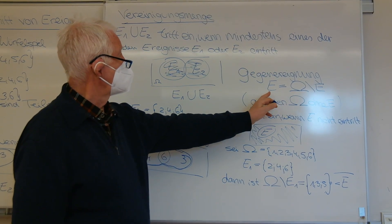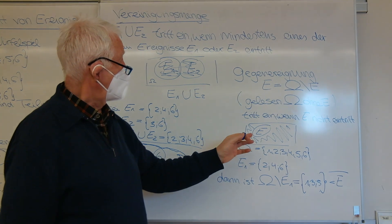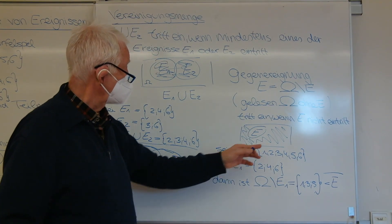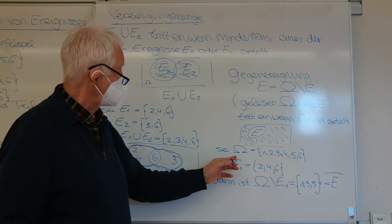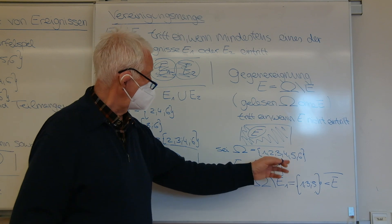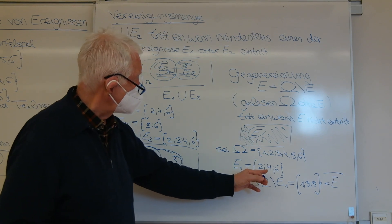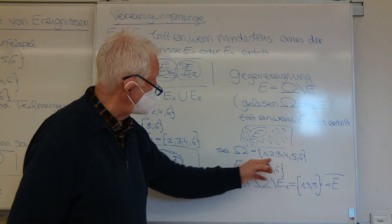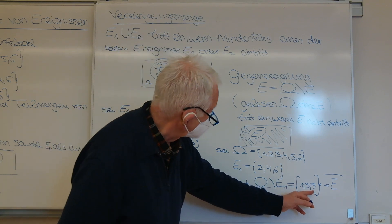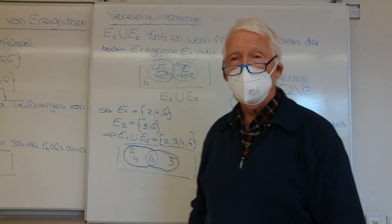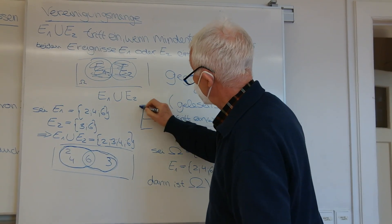Das Gegenereignis wird angegeben als E gleich Omega ohne E – "Omega ohne E" wird das gelesen. Und das tritt natürlich genau dann ein, wenn E nicht eintritt. Wir haben wieder den gesamten Bereich Omega von 1 bis 6. Nehmen wir an, E1 ist {2, 4, 6}. Dann ist Omega ohne E1: da muss ich halt die Elemente 2, 4 und 6 herausnehmen aus dem Omega, und dann bleibt übrig, dass unser Gegenereignis E1 quer gleich {1, 3, 5} ist. Man bezeichnet dieses Gegenereignis mit E quer.